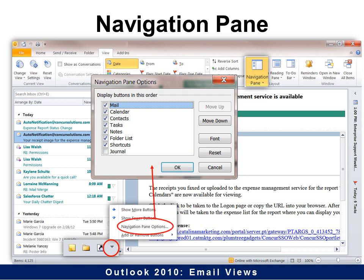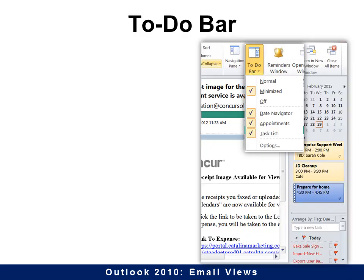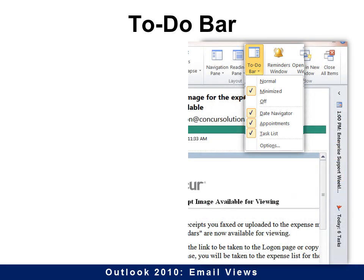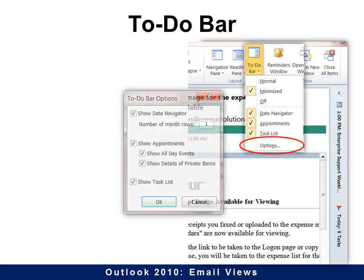The To-Do Bar is on the right. If you have a lot of things on your to-do list and you like to keep track of it, this is a good thing to see. I don't, so I like to minimize it. That just reminds me of my upcoming events, but that's about it. You also have Options.